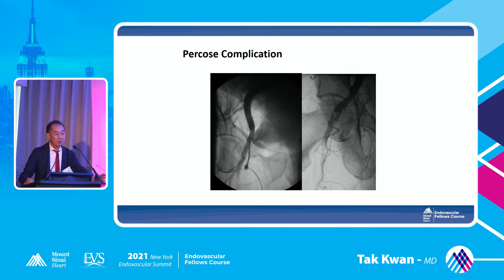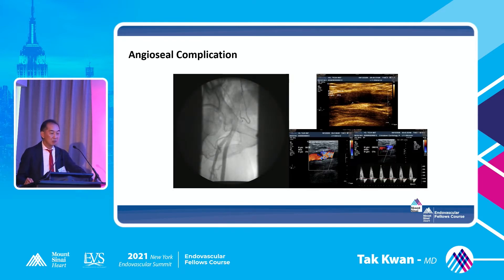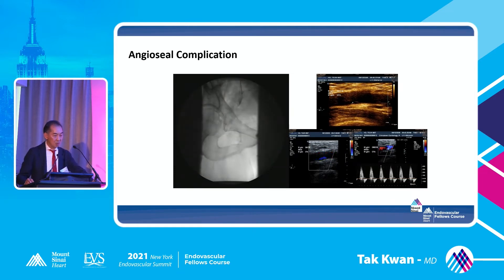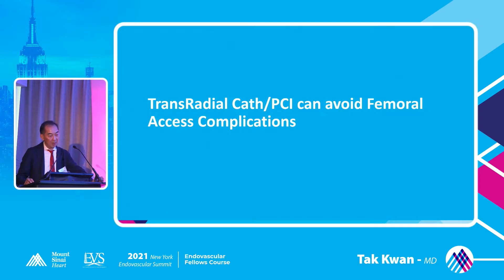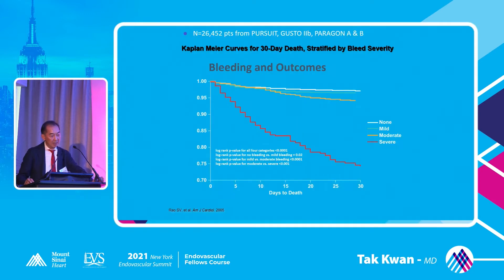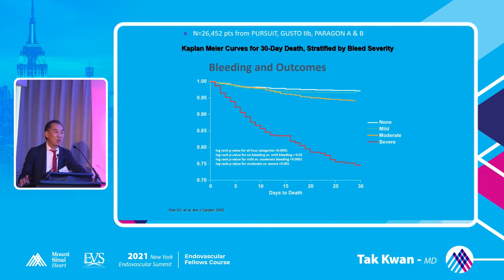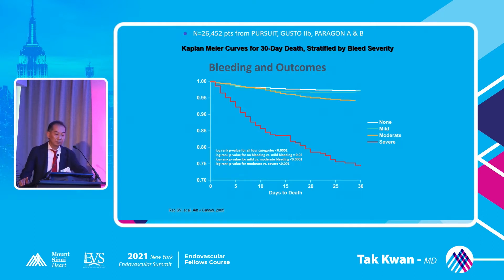We see this thing happen all the time. You put a Perclose, everything is fine, but then you lose the pulse. And with Angio-Seal, you close it but leave something behind causing stenosis. The bleeding complication is the one we don't like to see as an interventional cardiologist.